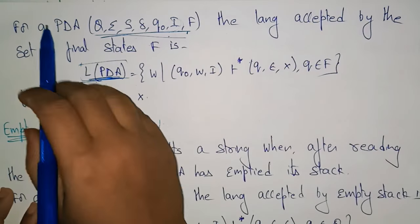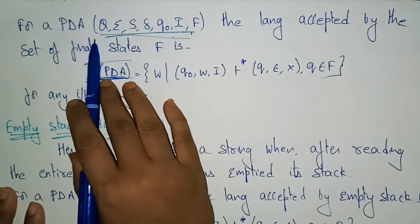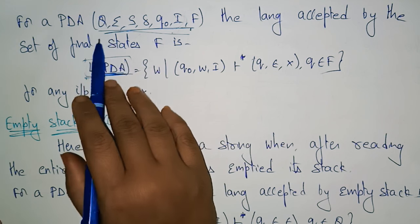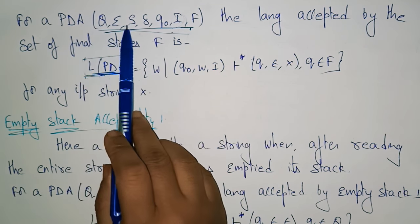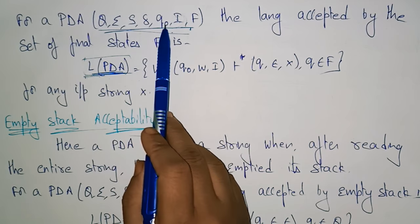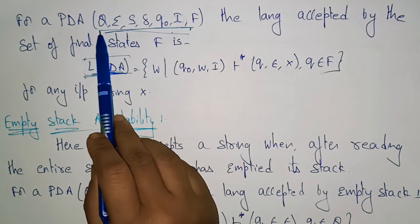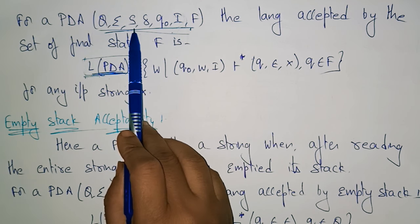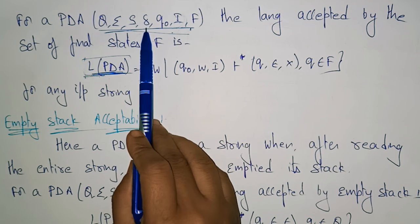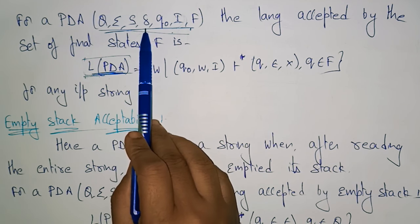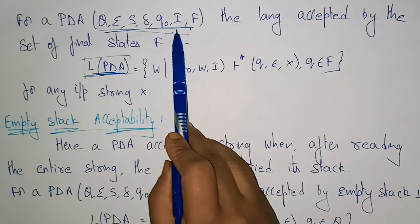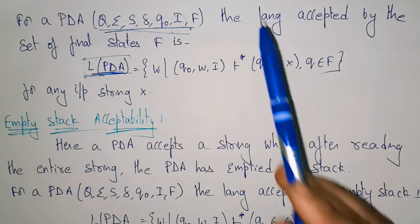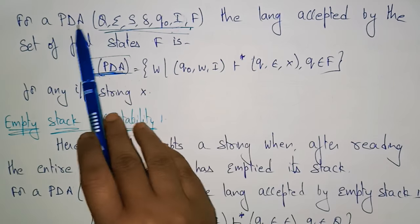For a pushdown automata, there are seven tuples: Q, Sigma, S, Delta, Q-naught, I, F — where Q is the set of states, Sigma is the input symbols, S is the stack symbol, Delta is the transition function, Q-naught is the initial state, I is the top of the stack, and F is the final state.